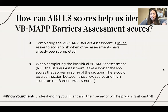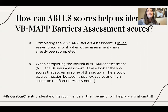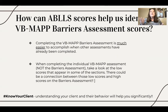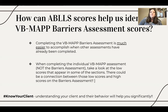We're going to look at how ABLES scores can help us identify VBMAP Barriers Assessment scores. Completing the barriers assessment is much easier whenever other assessments have been completed first. For example, you can look at the original ABLES scores and say, we're seeing really low responses in this section — and that will probably relate to high scores on the barriers assessment. It's really useful to make that connection: why are we struggling with certain skills? Because we're seeing a really high barrier score in X, Y, and Z. It's important to identify those and make that connection for your client.